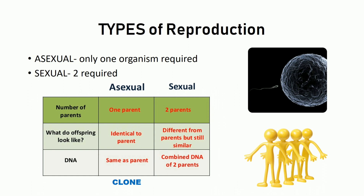Reproduction is a biological process by which an organism increases its number, and it's of two types. We have asexual reproduction, which involves only one single parent organism, and sexual reproduction, in which two parent organisms are involved. The offspring which are a result of asexual reproduction are very identical to the parent, and in fact they are copies of the parent, known as clones.